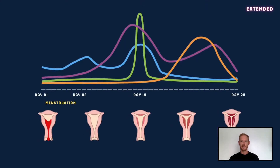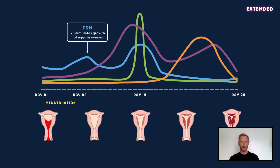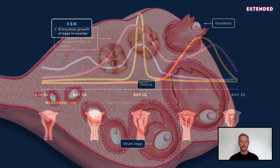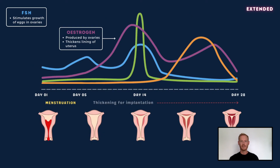The menstrual cycle begins with menstruation, that is, the expulsion of cells and blood from the broken down lining of the uterus. The pituitary gland at the base of the brain then releases follicle stimulating hormone or FSH. FSH stimulates the development of follicles and the eggs contained within them in preparation for ovulation. As the follicles develop, the ovaries secrete more oestrogen, which thickens the lining of the uterus and increases blood vessel formation.